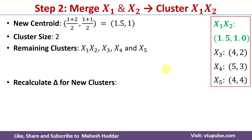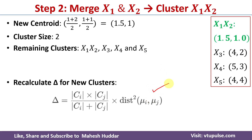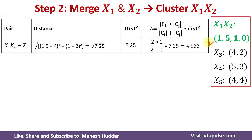The remaining clusters are {x1,x2}, x3, x4, and x5. We need to recalculate the merging cost for the new clusters. The new pairings are: {x1,x2}-x3, {x1,x2}-x4, {x1,x2}-x5, x3-x4, x3-x5, x4-x5. For {x1,x2} with x3, the Euclidean distance is square root of (1.5−4)² + (1−2)², which equals square root of 7.25. Distance squared is 7.25, and with cardinality of Ci equal to 2 and cardinality of Cj equal to 1, the merging cost is 4.833.